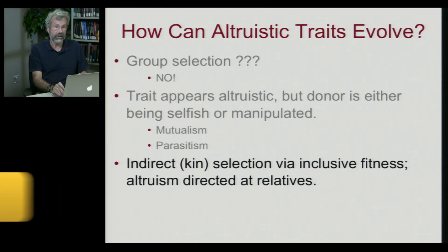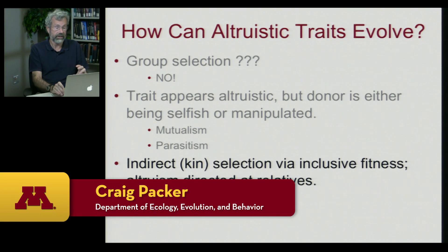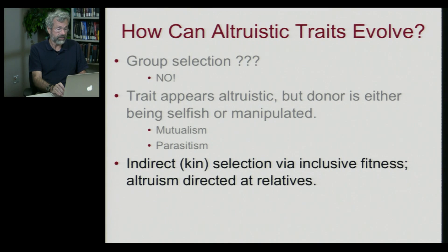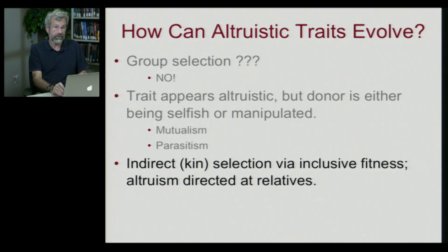Now we're ready to get into the real guts of altruistic behavior in animals. The most important mechanism is called indirect or kin selection via inclusive fitness. This is altruism that is specifically directed at close relatives.